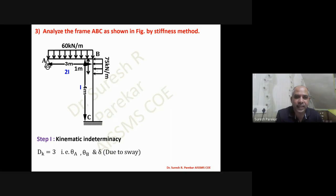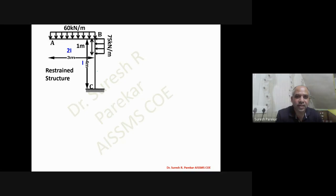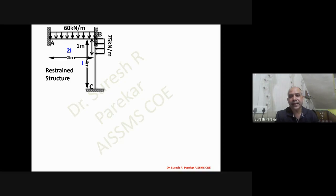Since we neglect axial deformation, sway affects columns only, not beams. For the restraint structure, supports at A and B are made fixed. FDL1 = MF_AB, FDL2 = MF_BA + MF_BC, and FDL3 is the horizontal reaction at B (since linear displacement relates to forces).